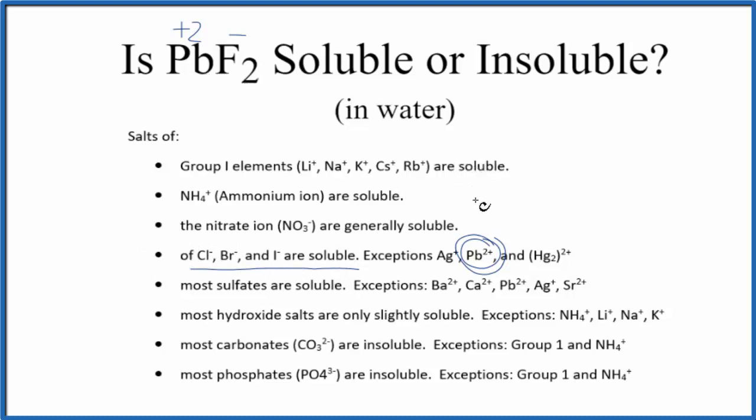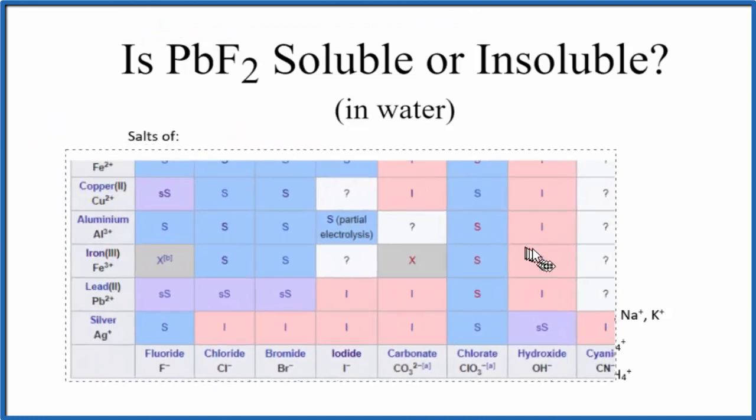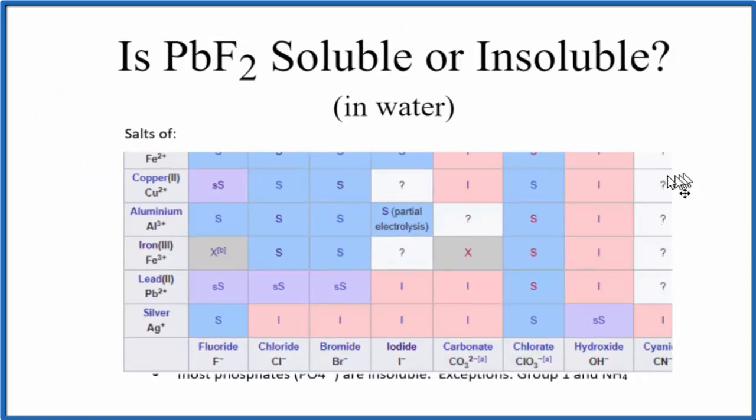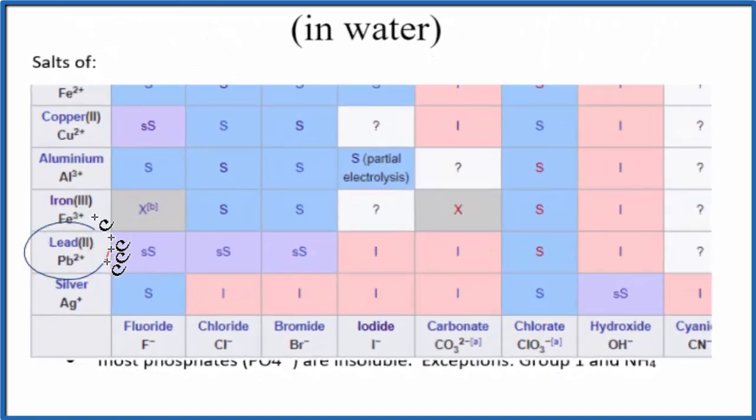We can take a look at a solubility chart to test that out. Here's a portion of a solubility chart with lead and fluorine on it. We look for lead 2, which is right here, and then fluoride. If we go up and then over, here it says slightly soluble, so only a little bit will dissolve in water.